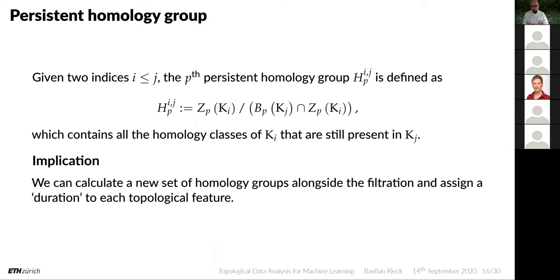The running example in your head should always be the cycle that gets increasingly closed by higher-dimensional simplices. While these cycles grow, you can calculate topological features and see how long they survive over the filtration. The implication is that we can calculate a new set of homology groups alongside the filtration and assign each topological feature a duration. Previously we were only able to count — we could say this is a torus with one connected component. But now we also have a duration, since we have this concept of scale; we suddenly incorporate geometrical information that was previously not available.